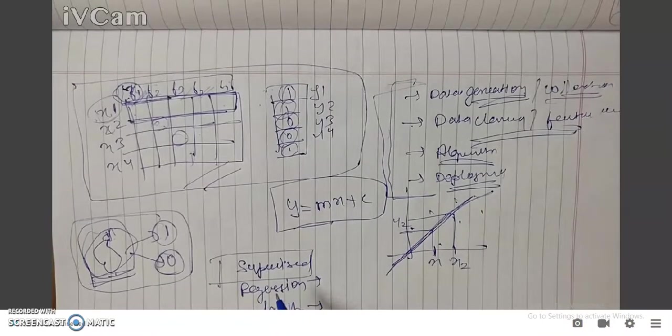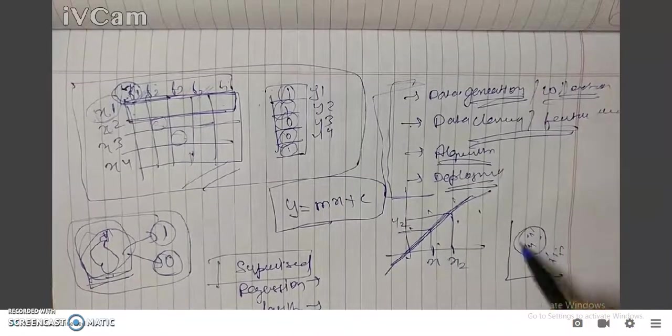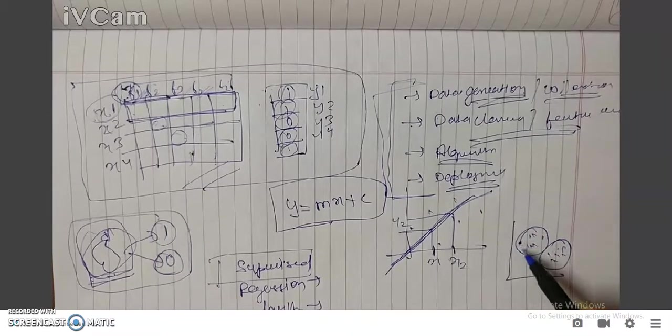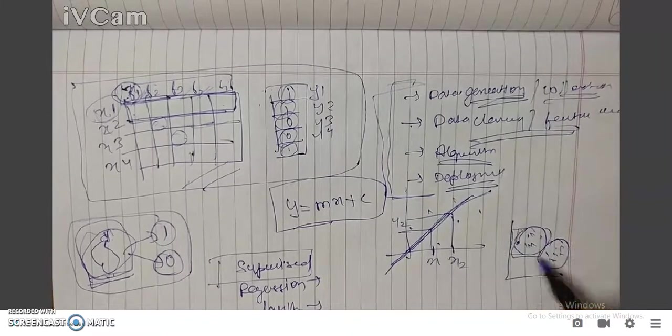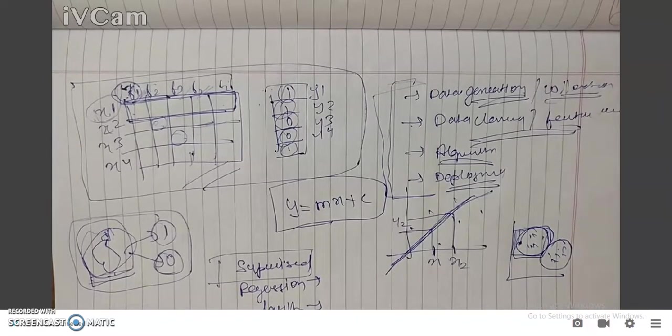Earlier we discussed supervised learning that required the labeled data to match with the training data. Then we have unsupervised learning where we are only given the training data, we don't have the label data, and we need to find the pattern out of their training data. An example can be clustering. Here we have these kinds of data - we can see that this is one cluster and this is another cluster. If our test point is something like here, then it can be said that this will lie in this region, in the first cluster. So this can be a problem of clustering.